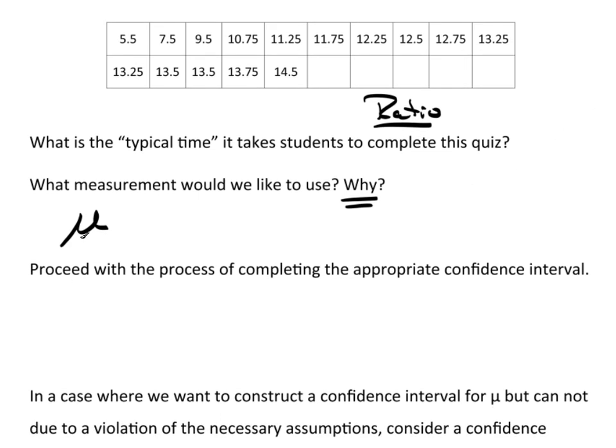If I want a confidence interval for the mean, which is what I want—I mean, typically, I'm just working through the thought process here—I need to address the assumptions. The assumption is that the distribution is normal. Now, I only have n equals 15 here. So the CLT does not apply.